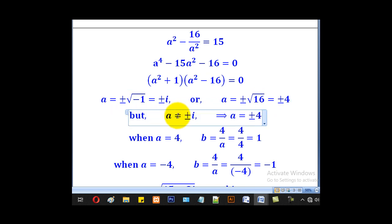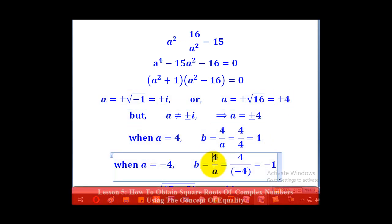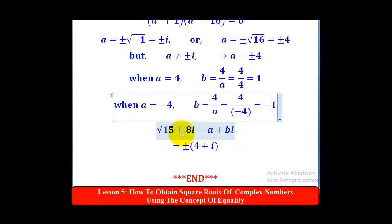But remember, A is a real value, so we shall ignore this imaginary part and take the real one, which is plus or minus 4. So for A equal to positive 4, we shall come up with B as 4 over 4, which is 1. And for A equal to negative 4, we shall come up with B as 4 over negative 4, which is negative 1. So those will be the values of A and B.